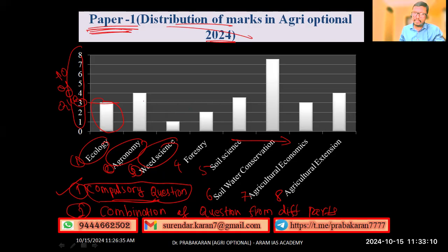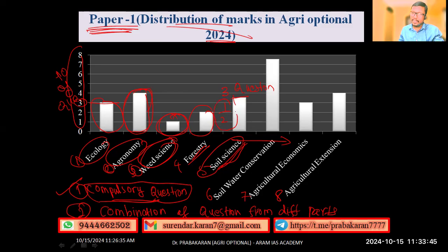From ecology, nearly three questions were asked. In agronomy, four questions were asked in the 2024 Paper 1, and only one question was asked from weed science. From forestry, nearly two questions were asked. Soil science had around 3.5 questions — three questions plus half a question, as part of a question was from soil factors affecting greenhouse gas emission.